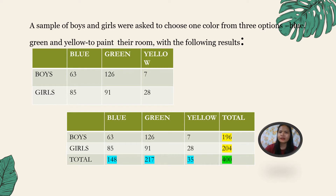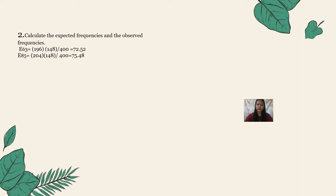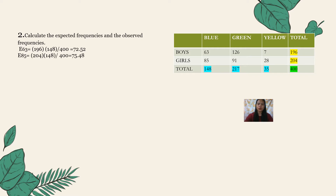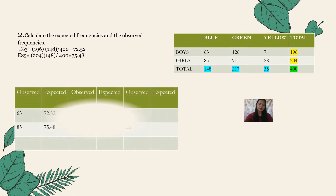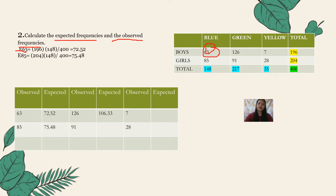The second step in calculating the chi-square is to calculate the observed and expected frequencies. For example, to find E63, we multiply 196 times 148 divided by 400, and we get the answer 72.52.